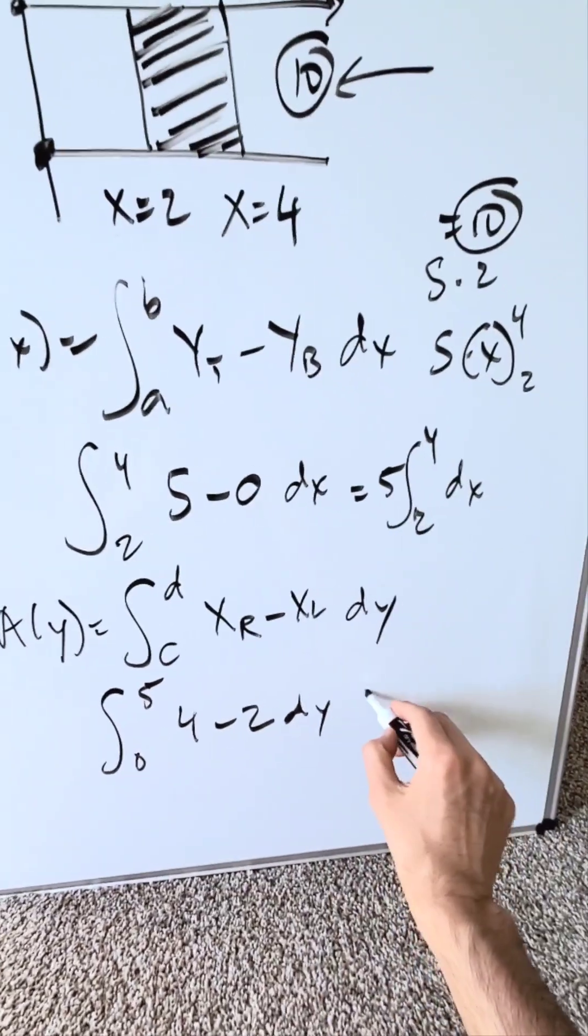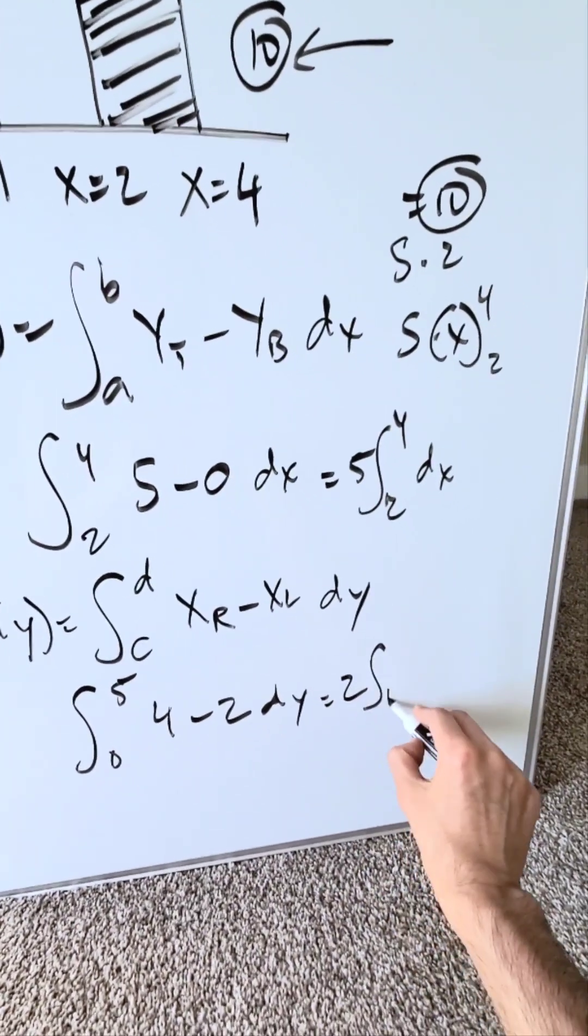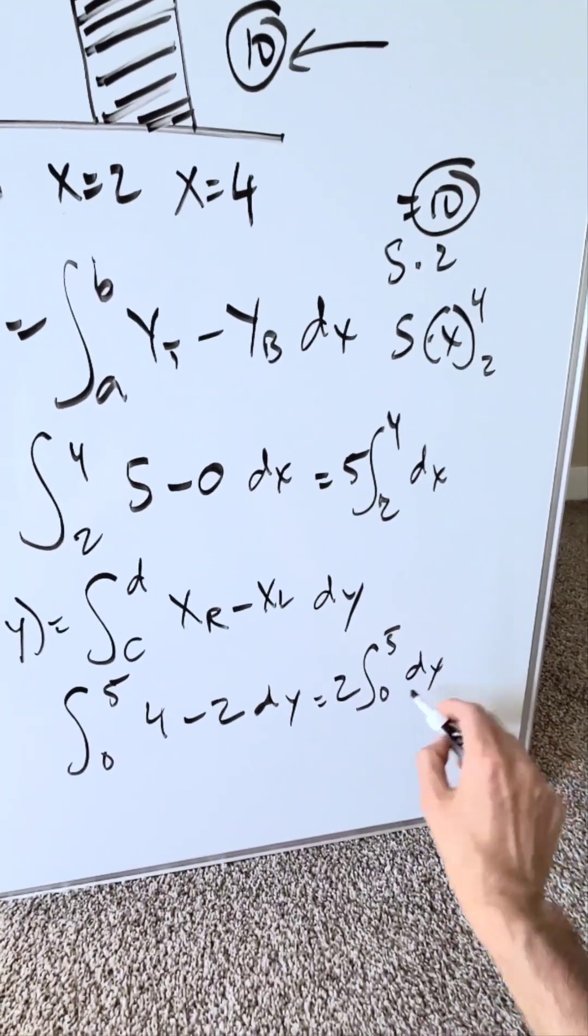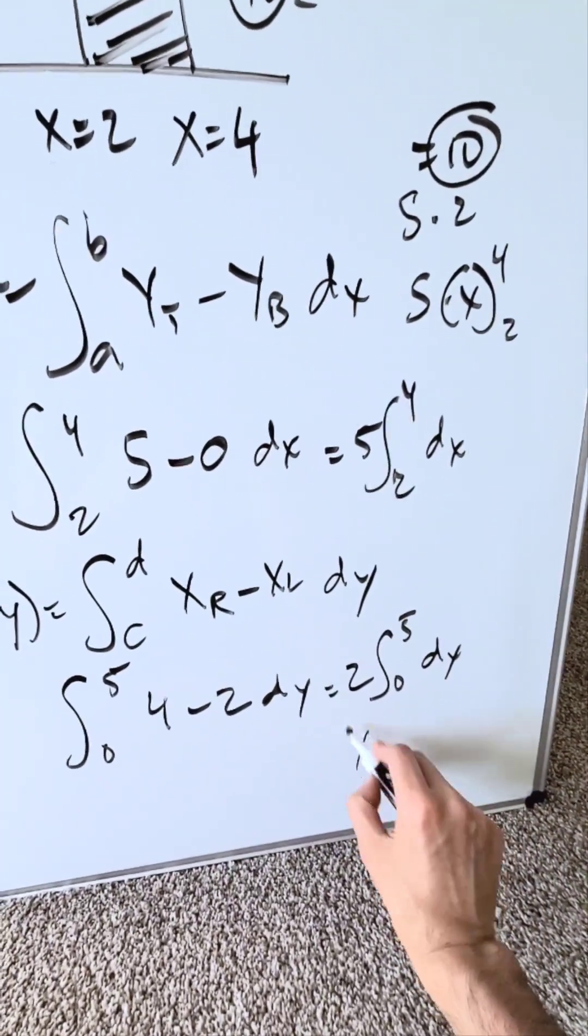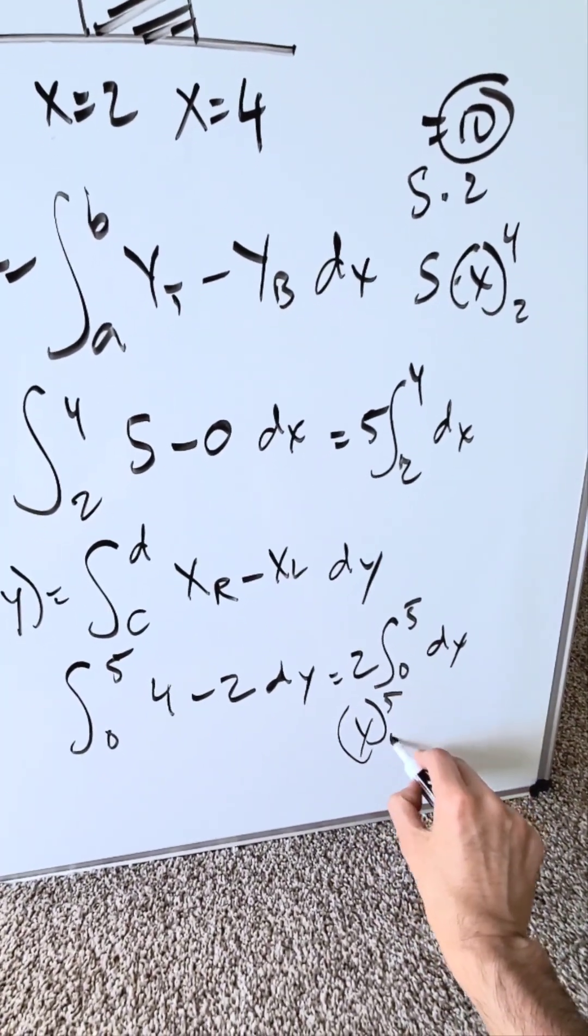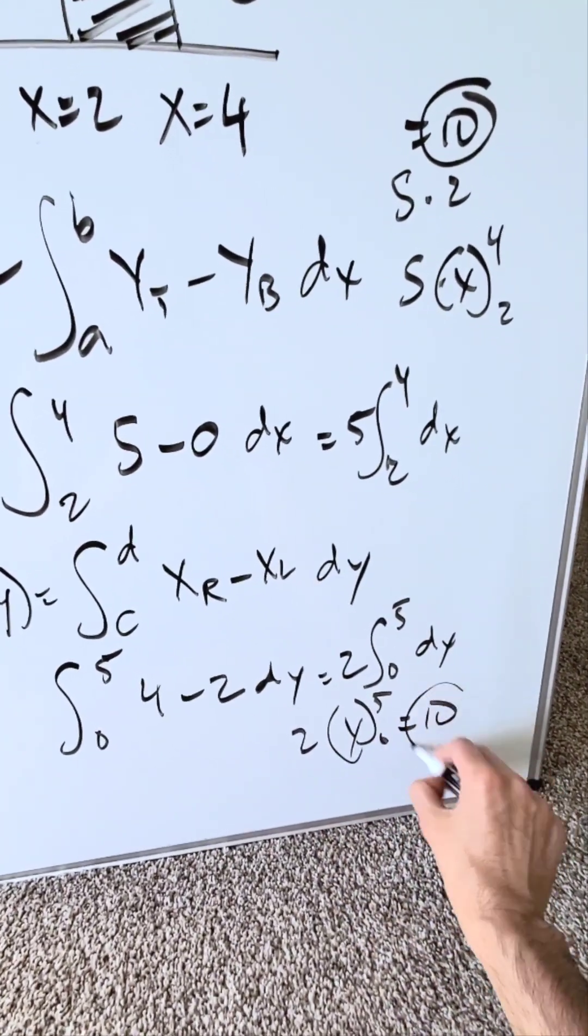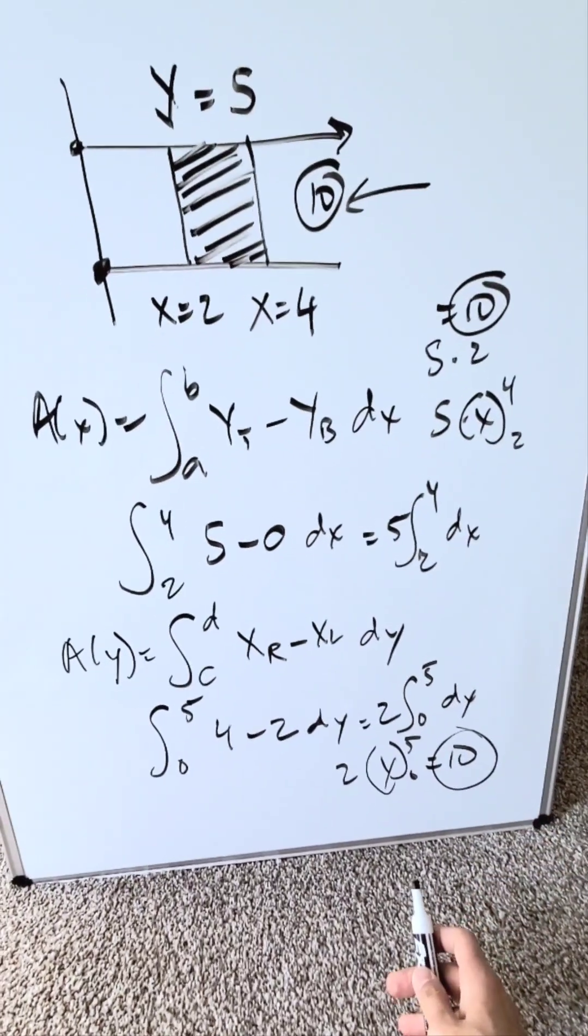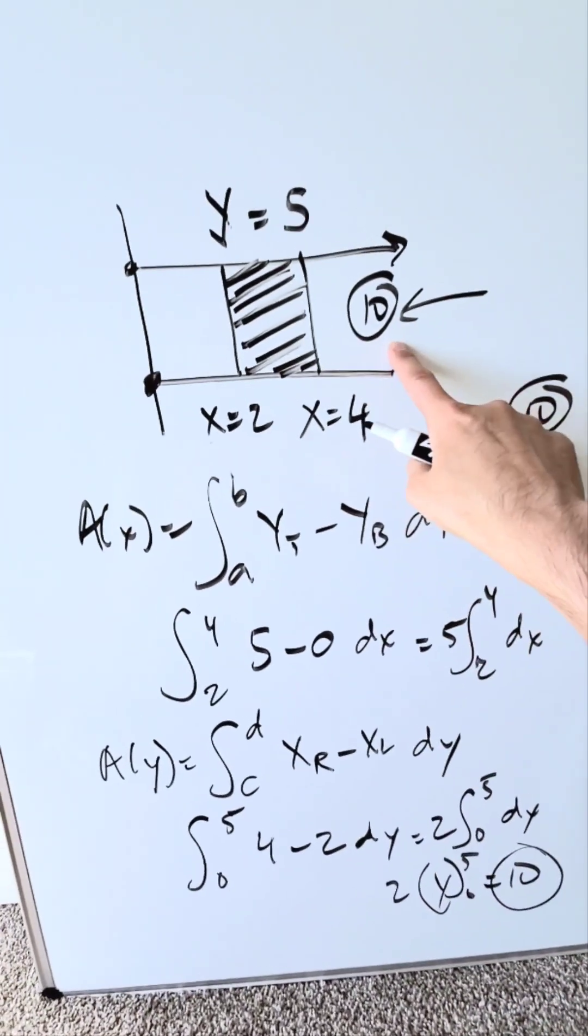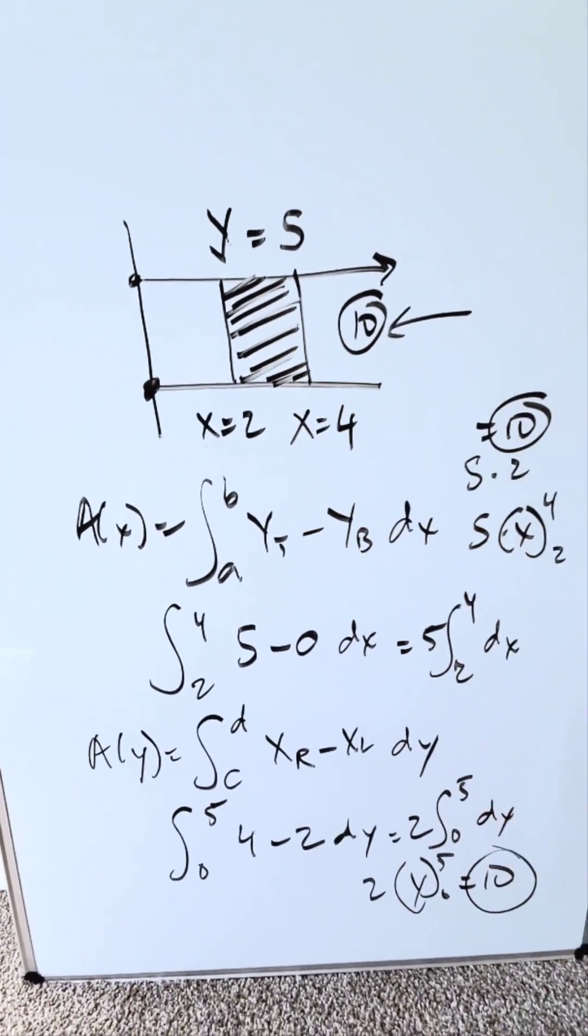I have a 4 minus 2, a 2, push it out. We have a 2, 0, 5, dy. The antiderivative coming here is a y. Upper limit 5, and a lower limit 0, with a 2 sitting outside. 5 minus 0 is a 5. 2 times 5 is a 10, and we've confirmed 10 again. Using a dy, using a dx, and using geometric. The area of this shaded region is a 10.